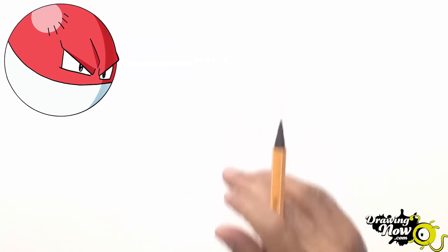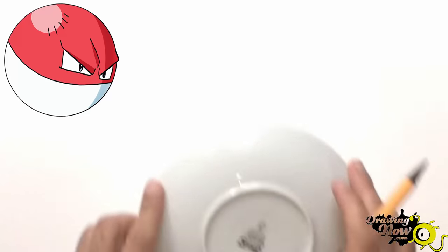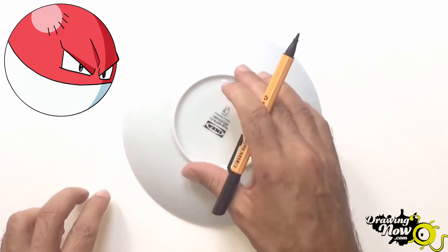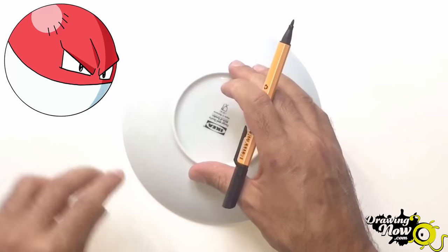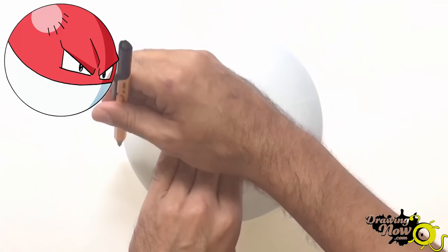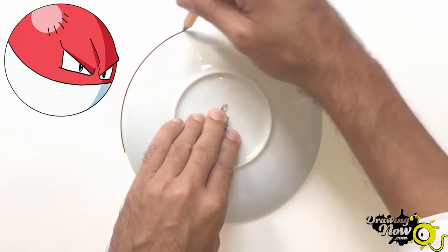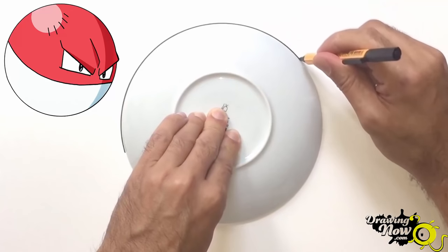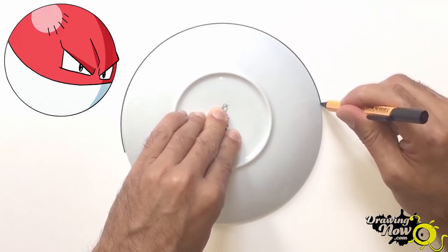So the first thing you do, you take anything that can make a circle at your place. For me it's a plate. So I will take a plate that I found in my kitchen and I start to draw a circle, but only till here.